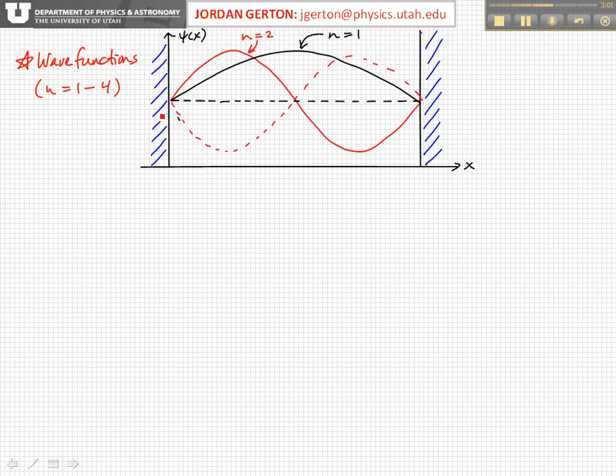For n equals two, we actually get two antinodes. You also notice that n equals one is even, that is, it's symmetric with respect to the center of the box, whereas n equals two is antisymmetric, we call that odd parity or odd symmetry. That's interesting.